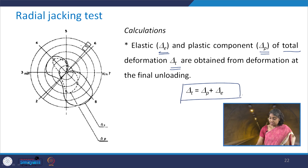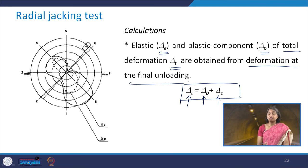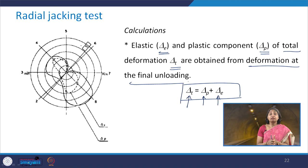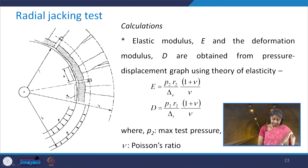The total deformation equals the plastic component plus the elastic component. These can be determined from the deformation at the final unloading. During unloading, only the elastic deformation will be recovered, and the remaining deformation is the plastic component. These two components can be separated using the unloading test data.